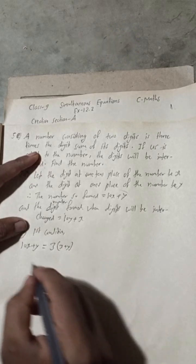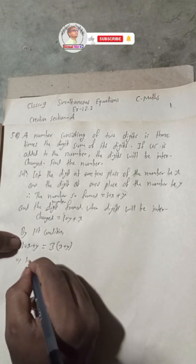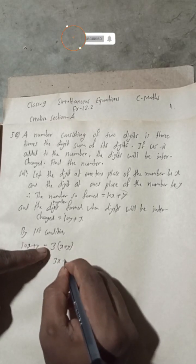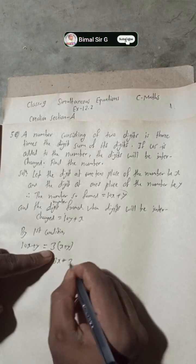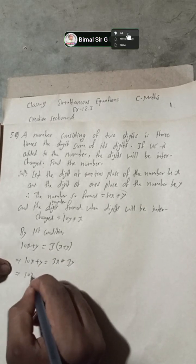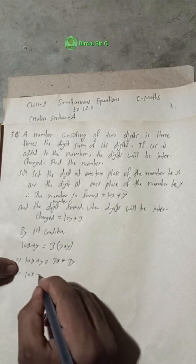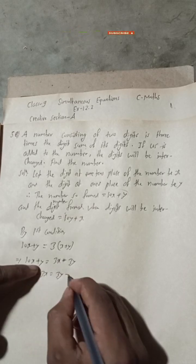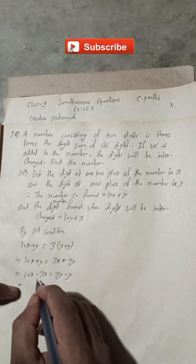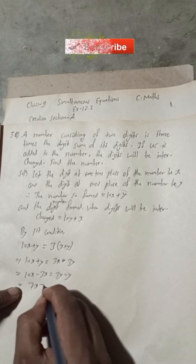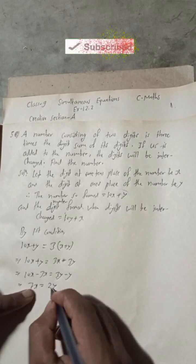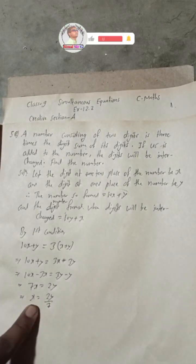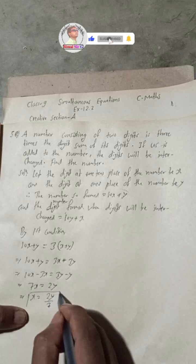The sum of the digits is x + y, so: 10x + y = 3(x + y) = 3x + 3y. Rearranging: 10x − 3x = 3y − y, giving 7x = 2y, which implies x = 2y/7. This is Equation 1.